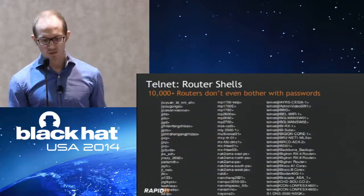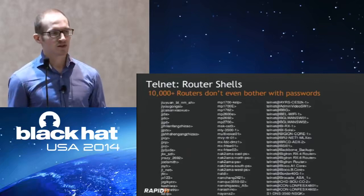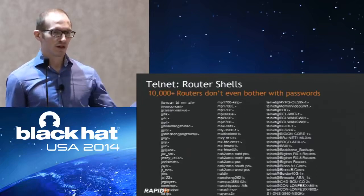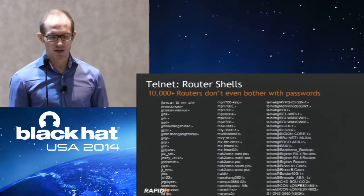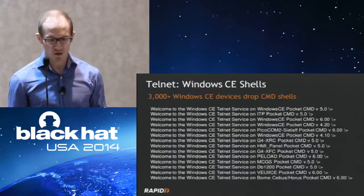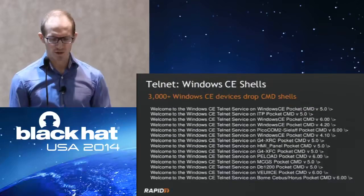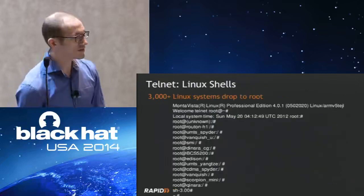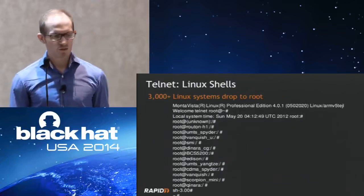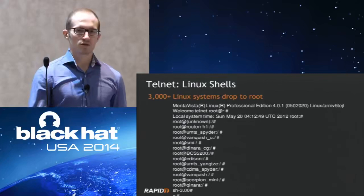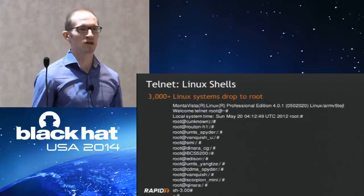One thing is Telnet shells — if you connect to the Telnet port on thousands of devices, they don't even give you a login prompt. They just give you a shell right away. You just do Telnet to an IP and you're given a prompt. The same thing happens on some Windows CE Telnet services — you get Windows CMD shells. You even get root shells on some router or switch devices. It's really weird. Is it intended? Is it misconfigured? Sometimes we didn't really understand what was going on because it doesn't make any sense.